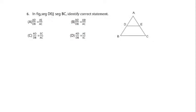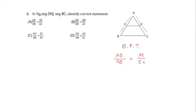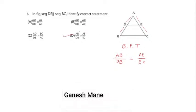The next question shows triangle ABC where DE is parallel to BC — this is the Basic Proportionality Theorem (BPT). The question asks to identify the correct statement. By BPT, segment AB is divided into AD and DB, and segment AC is divided into AE and EC. The correct statement is AD divided by DB equals AE divided by EC. Option D is the correct answer.